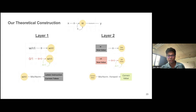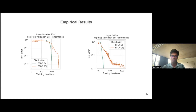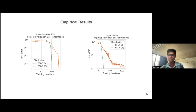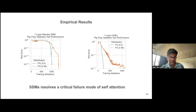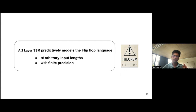It's fairly trivial to see how to solve flip-flop using SSMs, and we validated this through experiments with both Mamba and Griffin. The green line corresponds to in-distribution and the orange line to out-of-distribution. In both cases we converge to zero error fairly quickly — it doesn't converge as fast as LSTMs, but it does converge to zero error. More formally: a two-layer SSM can predictably model the flip-flop language at arbitrary input lengths and even with finite precision.